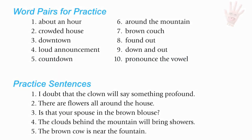Word pairs for OW: about an hour, crowded house, downtown, loud announcement, countdown, around the mountain, brown couch, found out, down and out, pronounce the vowel.